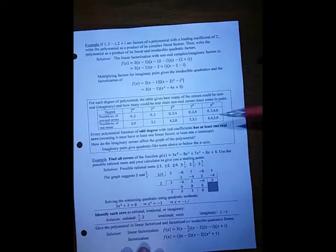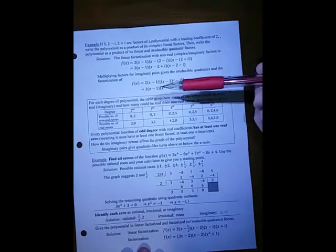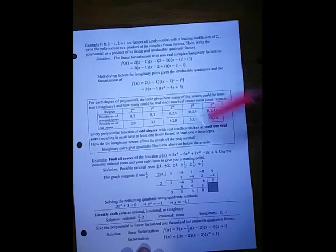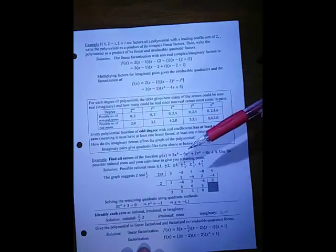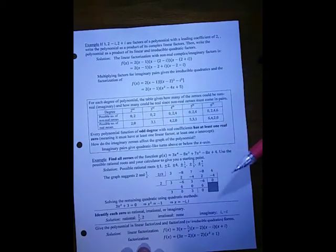So now how many roots could we have? Because imaginary happen to come in pairs, if it's an odd degree, it has to have at least one real because the other ones, the leftovers, could come in imaginary pairs. But one of them at least has to be real.